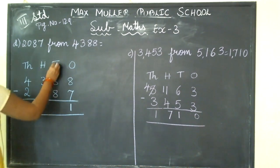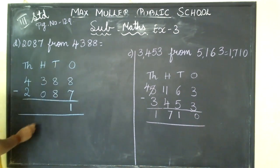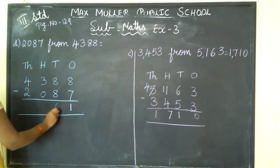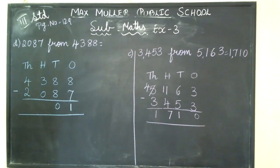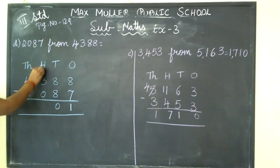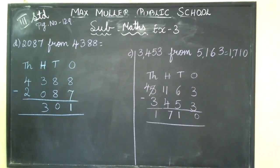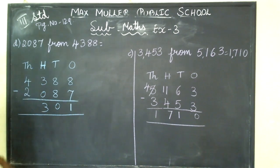Next, in the tens place: 8 minus 8 — from 8 if I minus 8, how much? Answer 0. Next, in the hundreds place: 3 minus 0 — from 3 if you minus 0, how much will you get? Answer 3 only. Write 3. Any number if you minus with 0, you will get the same number.